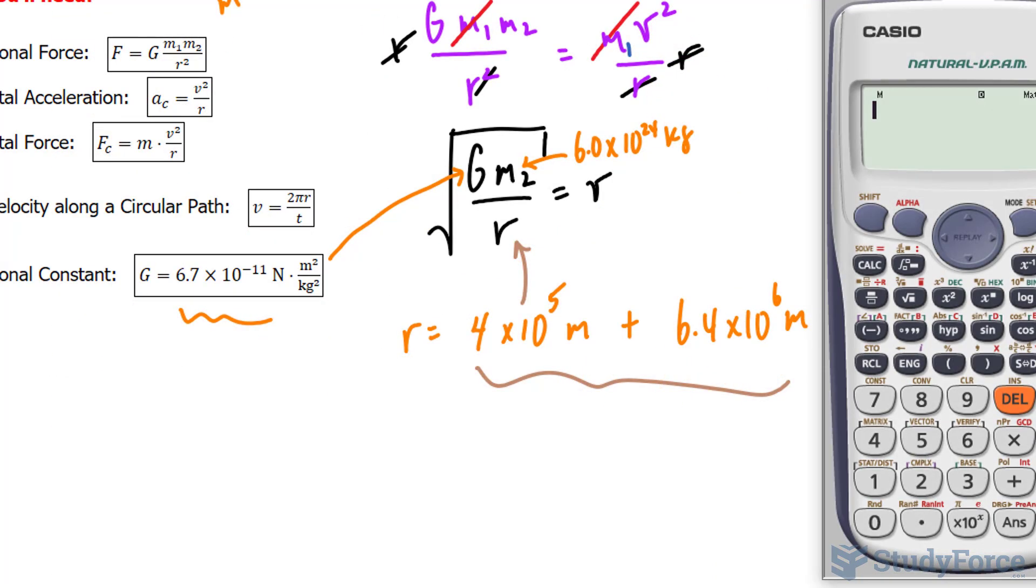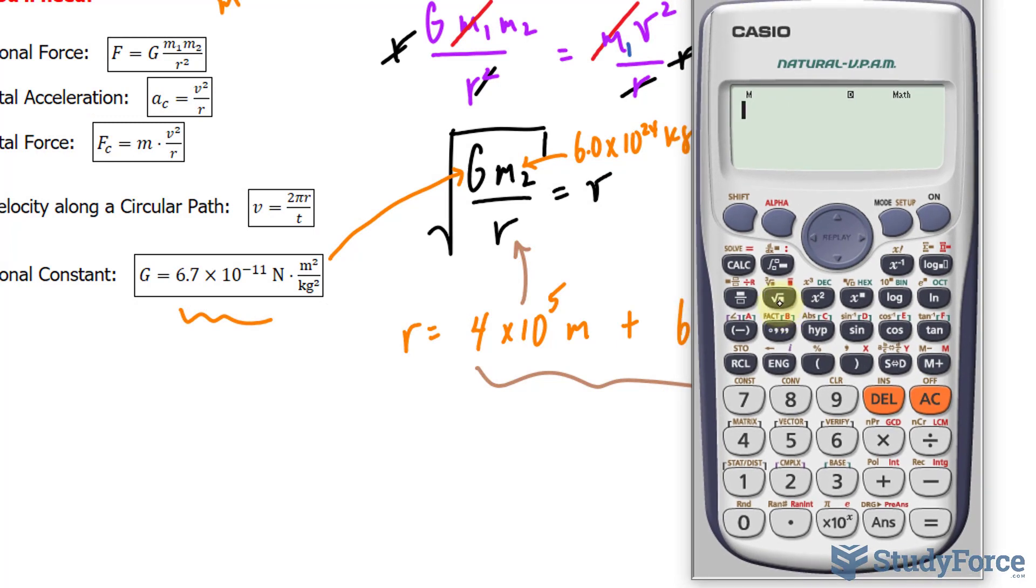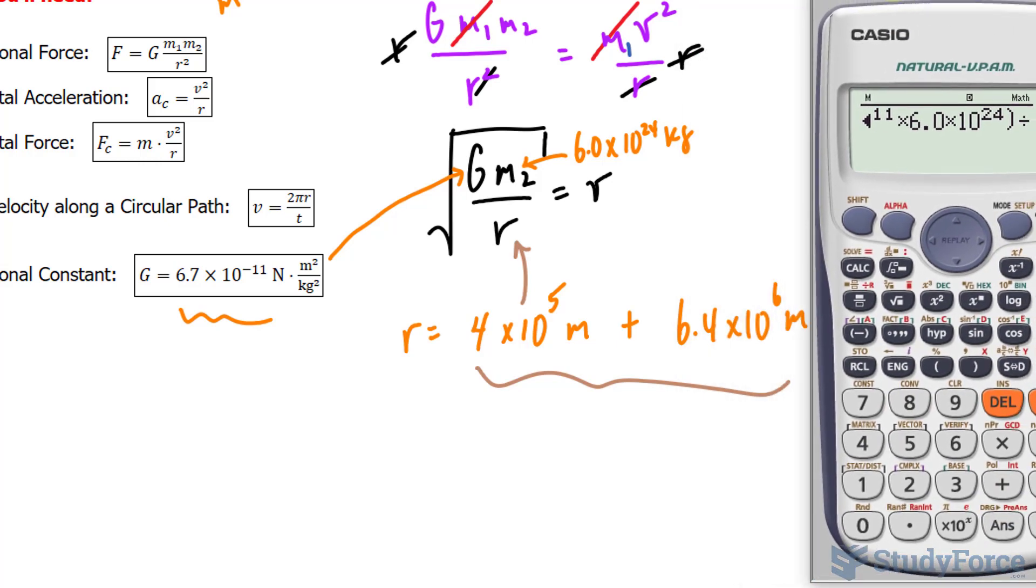Using our calculator, we'll write down the square root of the value of G, 6.7 × 10⁻¹¹. That gets multiplied to the mass of the Earth, 6.0 × 10²⁴, and that gets divided by the sum of those two values.